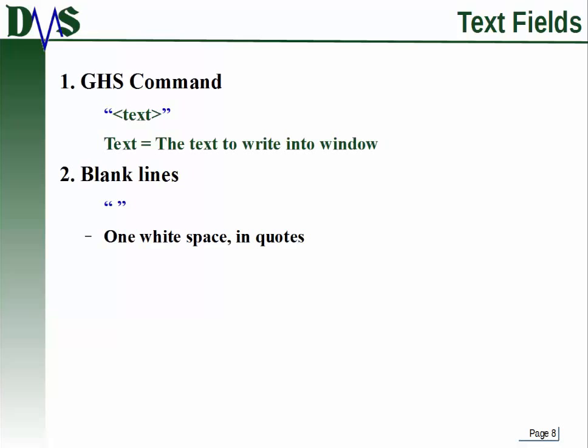The first and simplest field is a simple text field. To create a text field, no fancy commands needed — just type text in quotation marks. You can also use this as a trick to create blank lines in your form by putting one white space in quotation marks, which creates a line with a single space on it — effectively invisible.